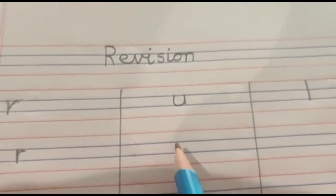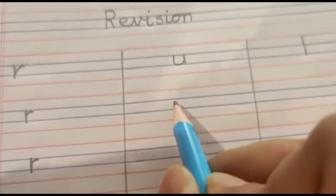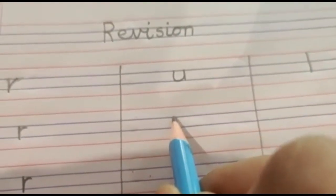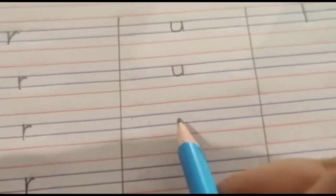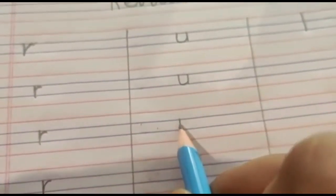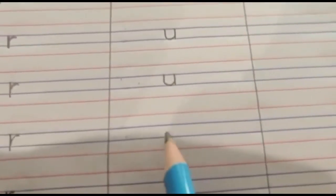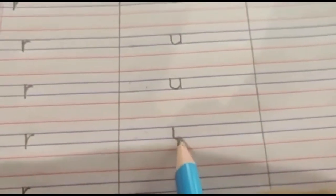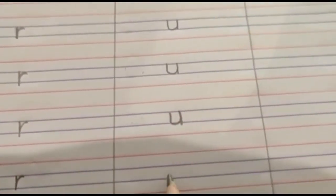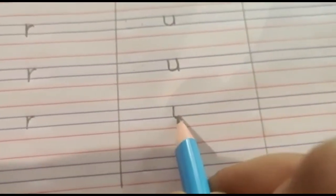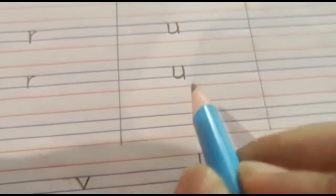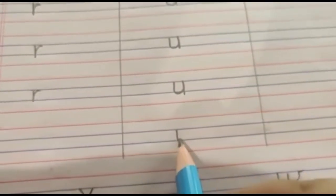Then U. Again for U, you will start on the first blue line, down, lumpity, up and down. U. Again, blue line to blue line down, lumpity, up, down. U. U says R. U says R. Children, when you are writing, I want you to say and write. U says R. U says R.